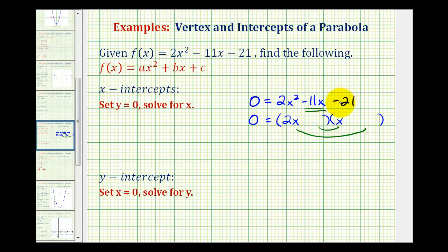So if we use the factors negative 7 and positive 3 for negative 21, we could put minus 7 here and plus 3 here. Notice how this would give us an outer product of negative 14x and inner product of positive 3x, which does sum to negative 11x, therefore this does factor. And these are the correct factors for our quadratic.